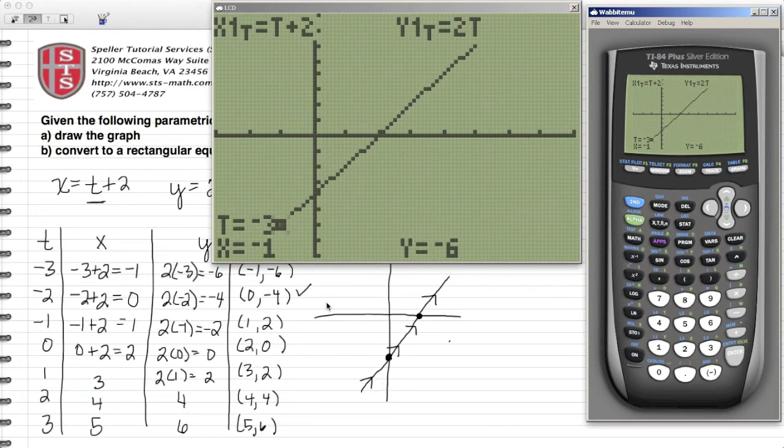We see here that when T is at negative 3, we are correct that it's at position negative 1, negative 6 for XY coordinates. Now I'm going to increment T to negative 2, and we see that again our calculation is correct at position 0, negative 4. At time negative 1 we're at position 1, negative 2.